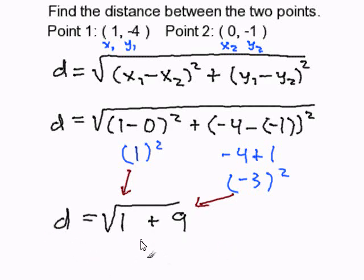Simplifying it further: 1 plus 9 is 10, and I write the square root. Now my distance is the square root of 10, and this completes my problem.